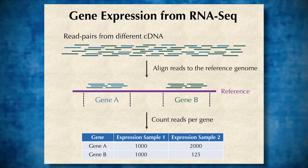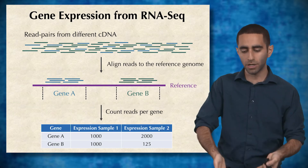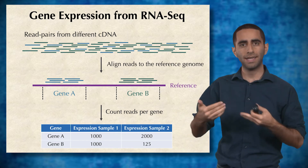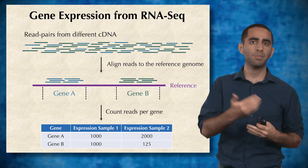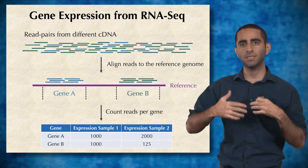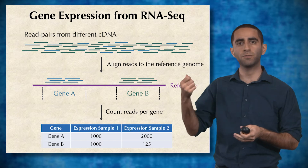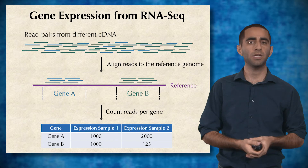Once we have these reads or read pairs, we can align them to the reference genome and look at how many reads map to every single gene. Recall that gene expression is when RNA is transcribed from DNA. So the number of RNA molecules from a specific gene corresponds directly to how many reads mapped to that gene. We use this read count as a proxy for counting the actual RNA fragments of that gene, and we can generate an expression matrix from this.